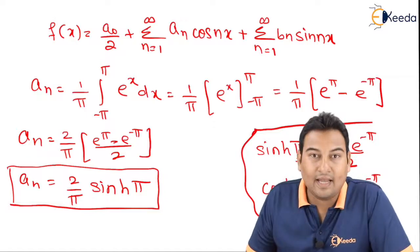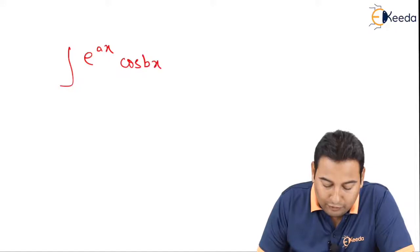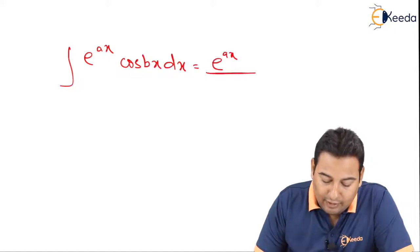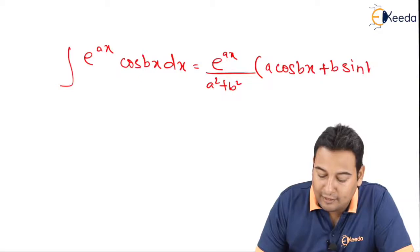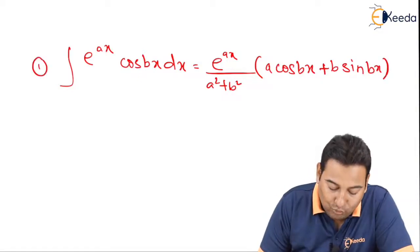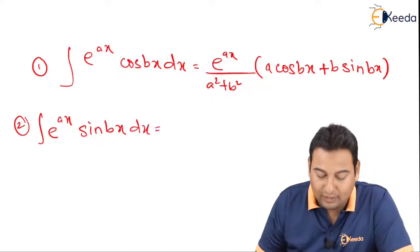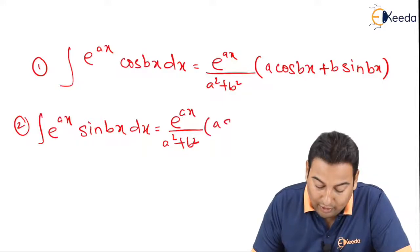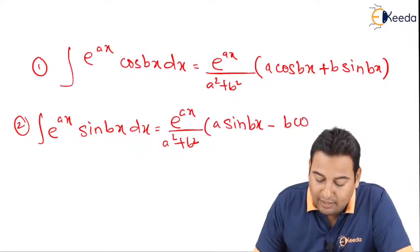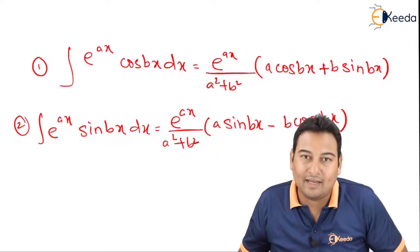Before going ahead, let me give you the integration formulas. The formula for ∫eᵃˣ·cos(bx) dx = eᵃˣ/(a²+b²) · [a·cos(bx) + b·sin(bx)]. You need to remember this formula. We also have the formula for ∫eᵃˣ·sin(bx) dx = eᵃˣ/(a²+b²) · [a·sin(bx) − b·cos(bx)]. You need to remember these two formulas, which will be required for computing aₙ and bₙ.